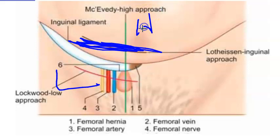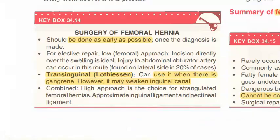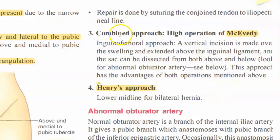McEvedy's high approach is used when there is gangrene, but it can weaken the inguinal canal. The Lothissen trans-inguinal approach, combined approaches, and McEvedy's approach are options. For a strangulated femoral hernia, a combined approach is used — McEvedy's, with a vertical incision over the swelling extended above the inguinal ligament.